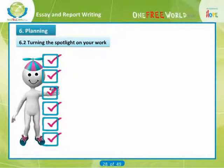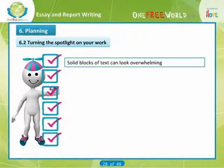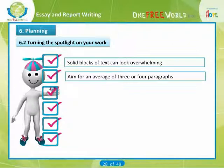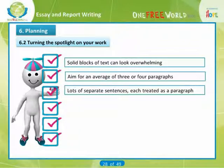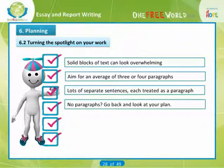Even the appearance of work can be a giveaway and betray a lack of planning. Solid blocks of text can look overwhelming, so you should normally aim for an average of three or four paragraphs per side of word-processed paper. Solid blocks imply the writer hasn't taken the time or is unable to organize the material. At the other extreme, written work that is very broken up — lots of separate sentences each treated as a paragraph — conveys the same impression that the writer doesn't have a plan or hasn't developed ideas in sufficient detail.